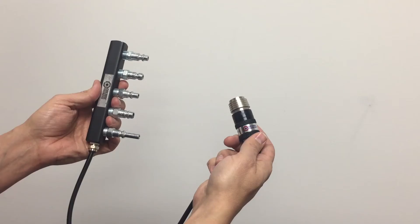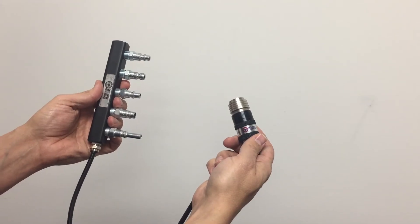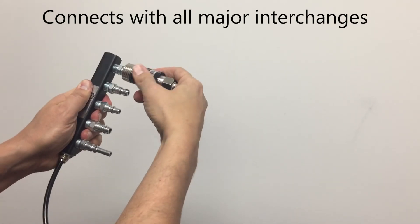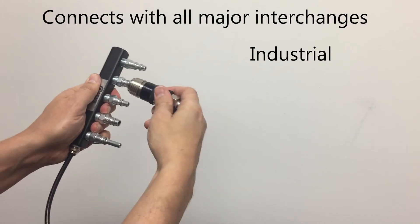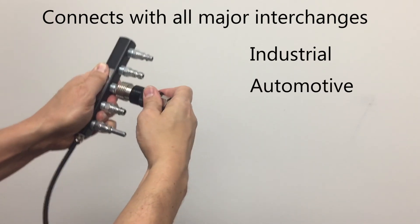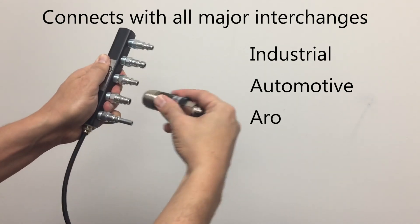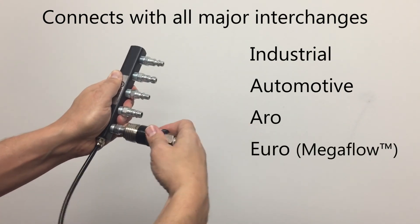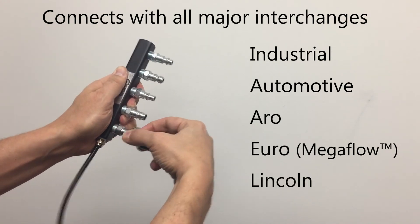In addition to the built-in safety of the 5-in-1 safety exhaust coupler, another great benefit is that the quarter-inch body connects with all major interchanges, including Industrial, Automotive, ARO, Euro (Megaflow), and even Lincoln.